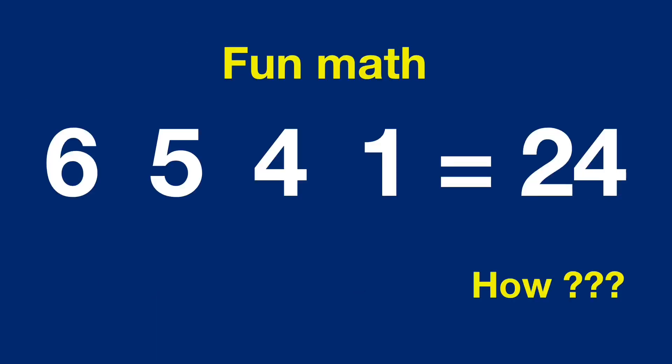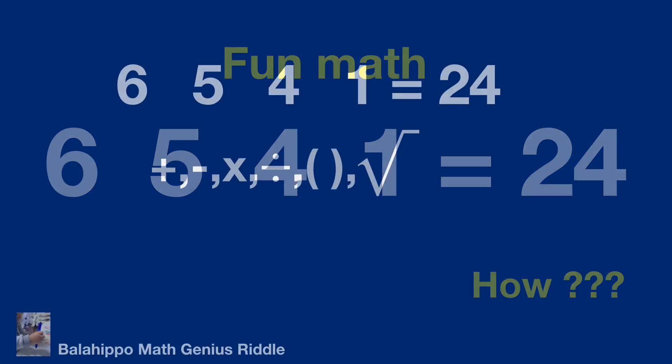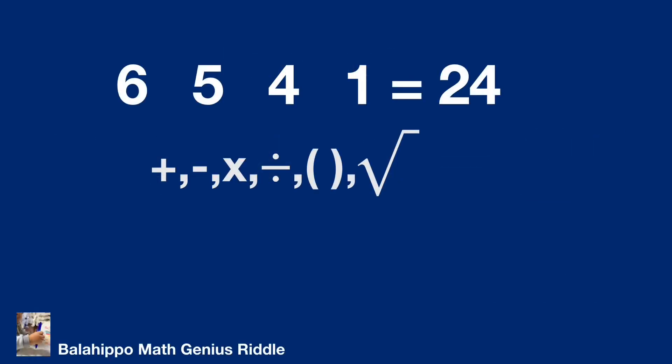We have the numbers 6, 5, 4, and 1, then to get the value 24. Before solving the question, we have the basic criteria. We limit to use plus, minus, multiplication, division, brackets, and square root to generate an equation.